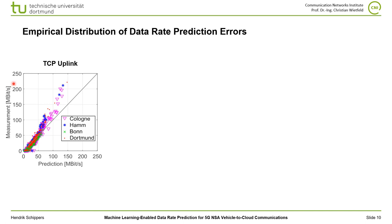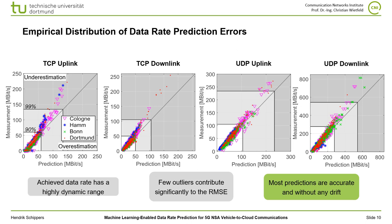The prediction error can be better understood if the distribution of the data rate prediction error is analyzed. Here, the measured data rate is plotted over the prediction. The straight line that bisects the graph represents a perfect fit. Points over this line represent an underestimation of the data rate, and points under this line represent an overestimation. Most of the measurements are located in the area below 50 Mbps. Only 1% of the measurements exceed 140 Mbps and increase the dynamic range of the data rate significantly; they also drift towards underestimation and thus increase the root-mean-squared error drastically.